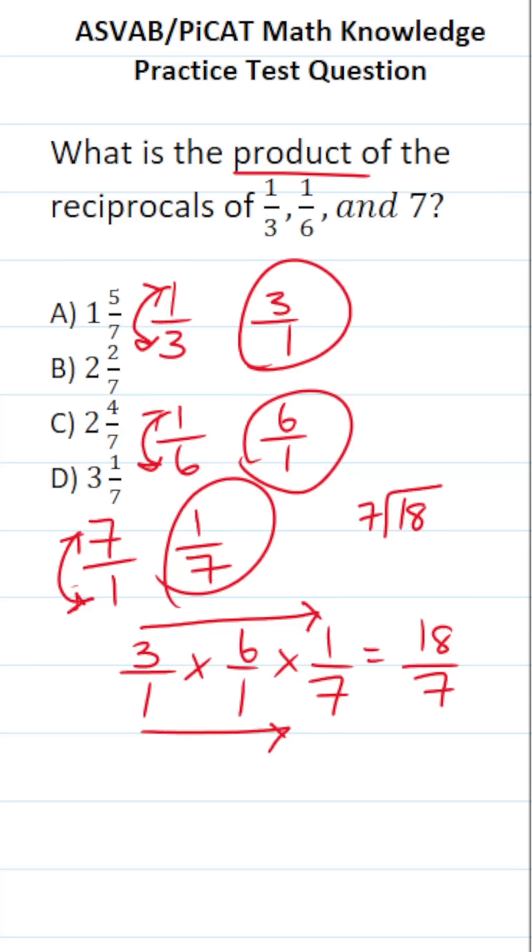18 divided by 7. How many times does 7 go into 18 without going over? That's 2 times. 7 times 2 is 14. 18 minus 14 is 4. And just like that, we have enough to write our mixed number.